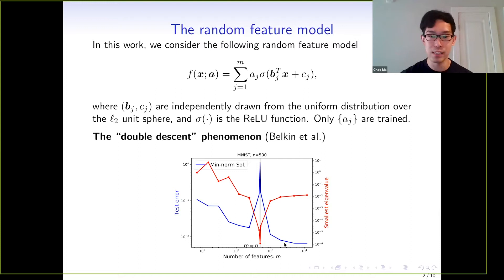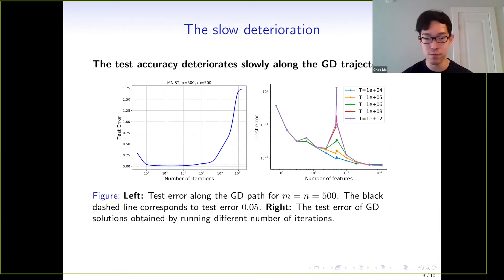However, if we take a closer look at the gradient descent trajectory, we'll find something different, shown in the left panel. If we consider the curve of test error with respect to the number of iterations, at the case of M equals N, we'll see that although the test error will become very large finally, it keeps small for a very long time, from like 10 iterations to 10^7 iterations. If we stop gradient descent at a small time, the double descent phenomenon will not be obvious, and the test error will be monotonically decreasing as M becomes large.